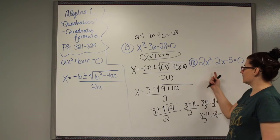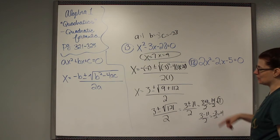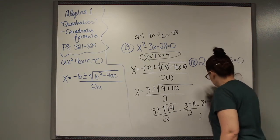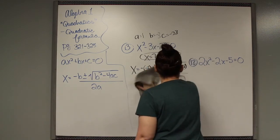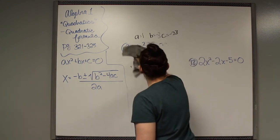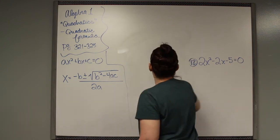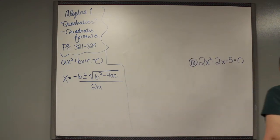I'm going to work 18 out to show you that sometimes these don't come out as regular numbers. Sometimes things stay in radicals and that's perfectly okay. So let me get this off the board and then we'll use the board to work 18.